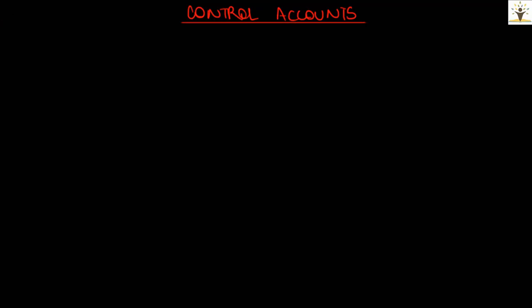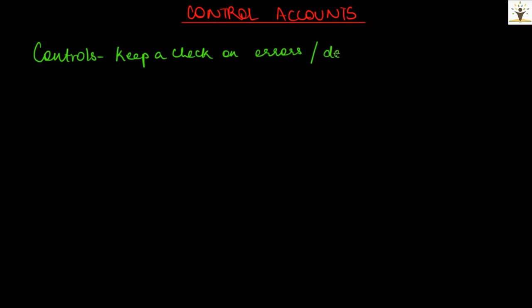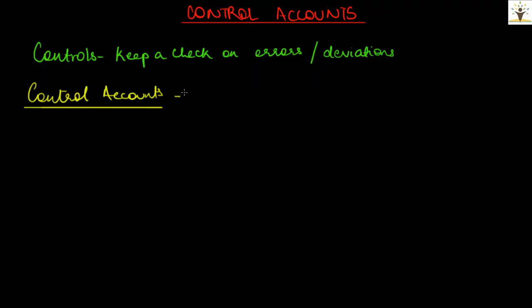In order to understand the meaning and function of control accounts, first let us understand what is meant by control. Controls are functions or processes that help to keep a check on errors or deviations from standards. In like manner, control accounts also help to detect any errors committed in the double entry records.